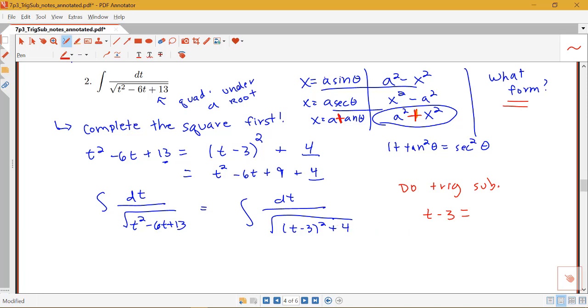And then this is going to be equal to a times tan theta. Well, my a here is 2, since I've got plus 4 plus 2 squared. So this is going to be 2 tan theta. So that's my initial setup.